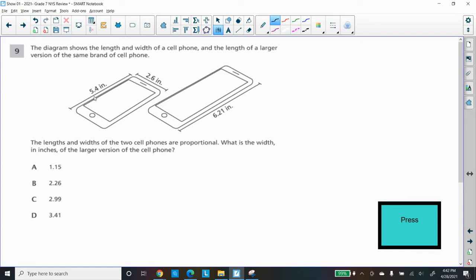The larger cell phone is 6.21 inches. The other cell phone is 5.4 inches. So I know these are my lengths, I can call that L for length. And W must be on top. That would be our width. The lengths and width of the two cell phones are proportional. What is the width in inches of the larger version of the cell phone? They gave us the width up here, which was 2.6. So we want to know what this width is. The key is making a proportion.